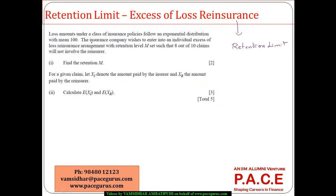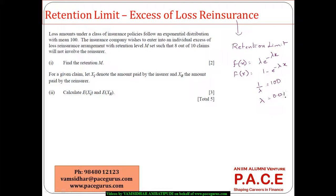Loss amounts under a class of insurance policies follow an exponential distribution with density function λ·e^(−λx) and distribution function 1 − e^(−λx). The mean is 100, and since the mean of the exponential distribution is 1/λ, we get λ = 0.01.